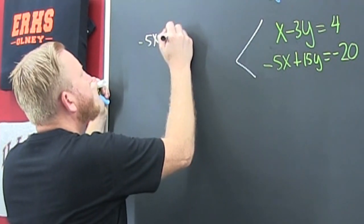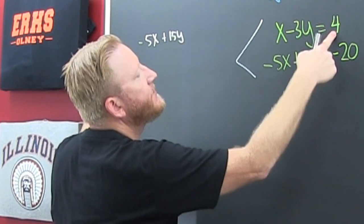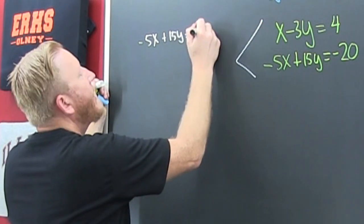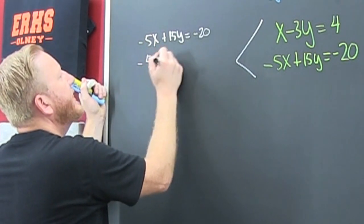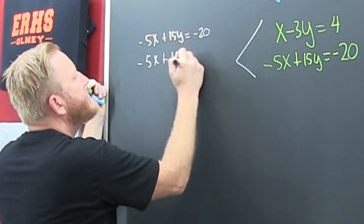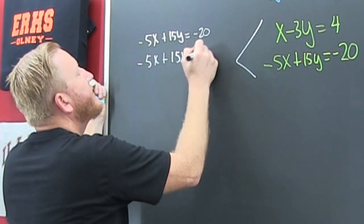And then minus 5 times 4 is minus 20. And that one under it, you see they are the same. When they are the same, they have infinite solutions. But the point of this video is not that they are the same, it is writing it as a point.